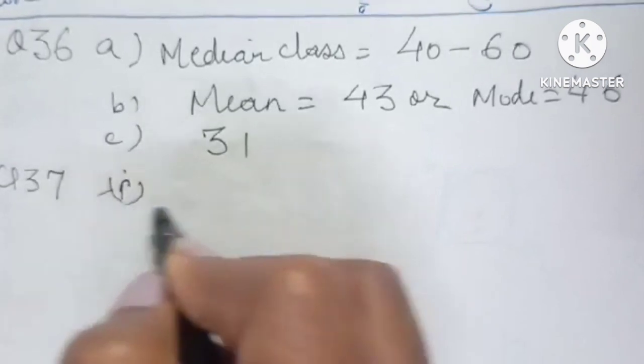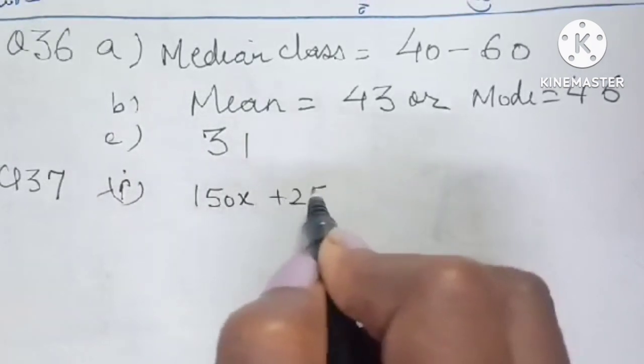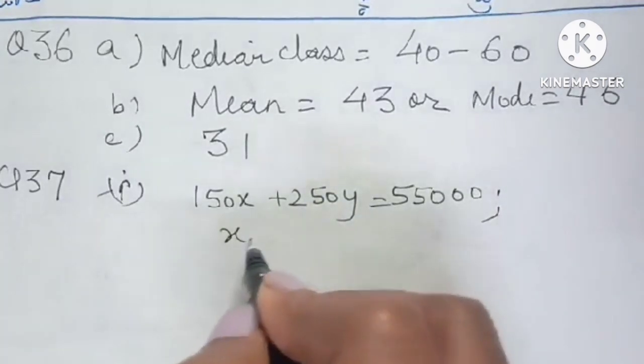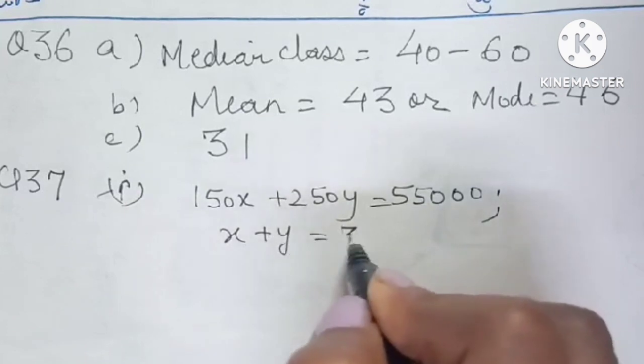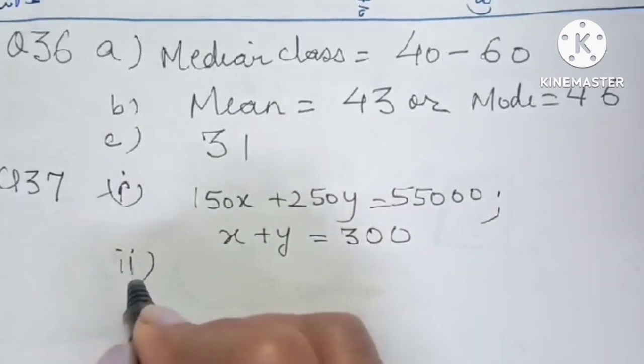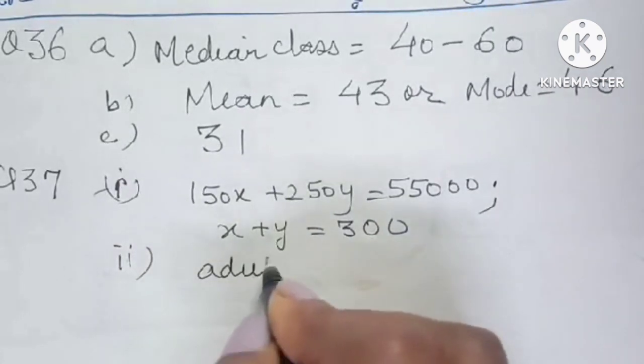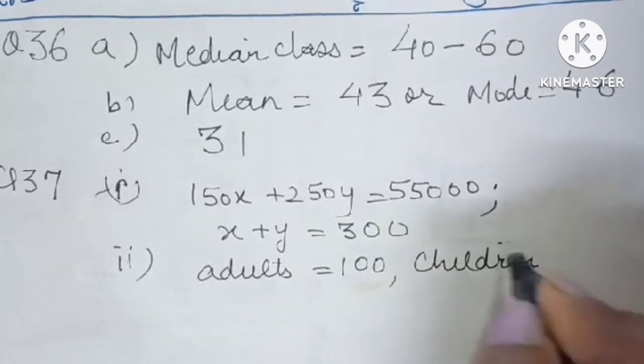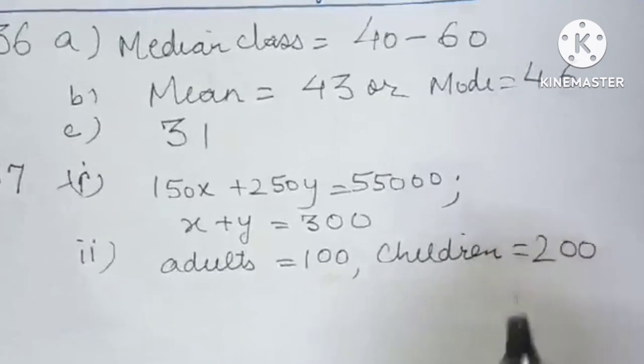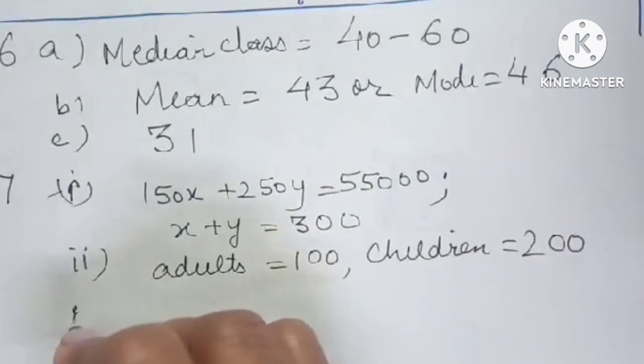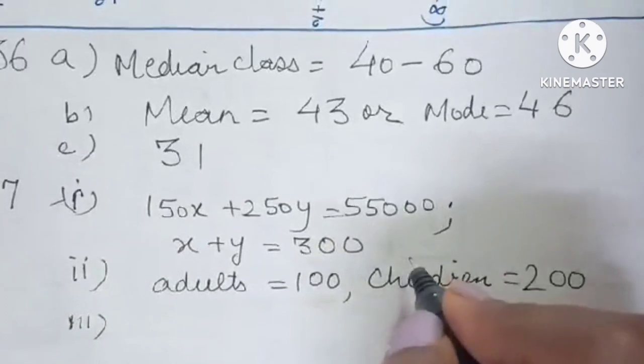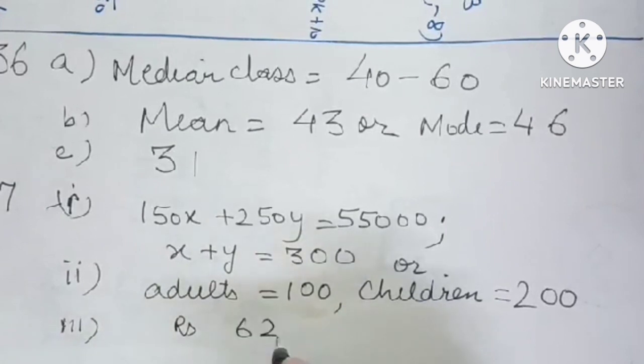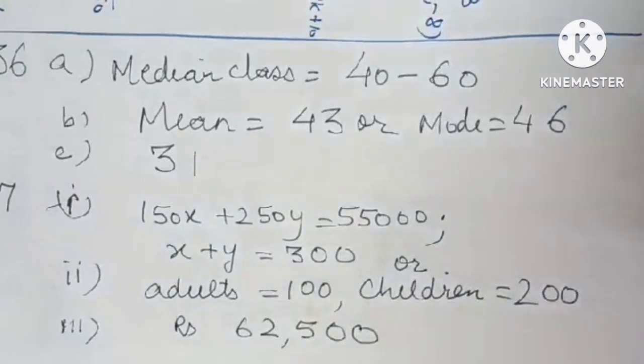Question number 37. 150x plus 250y is equal to 55,000 is the first equation, and x plus y is equal to 300 is the second equation. For second part you have to solve them. So number of adults come out to be 100, and number of children come out to be 200. Both are asked in or part. For third part, if they are interchanged, then answer comes out to be 62,500 rupees. Do not forget to put the units everywhere.